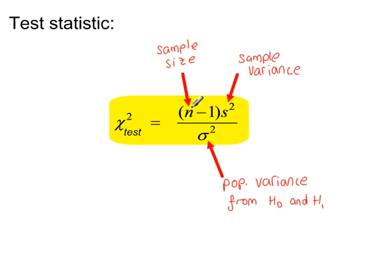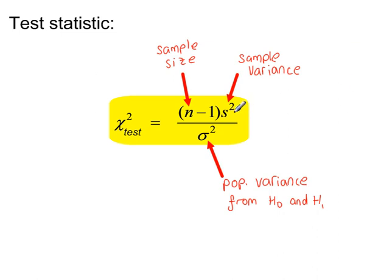N is the sample size, and it has to be a random sample. S-squared is the sample variance — it's either given, or they give you data so you can work it out using option 4 from your calculator and then squaring that. Or you may use the formula for S-squared, which is in the formula book on page 12.